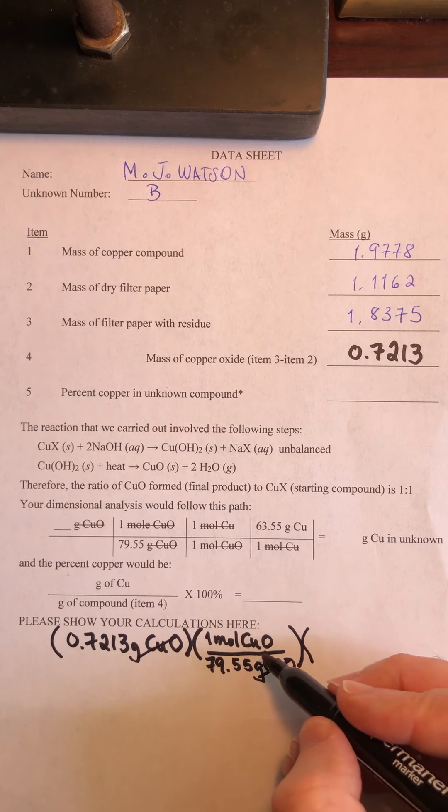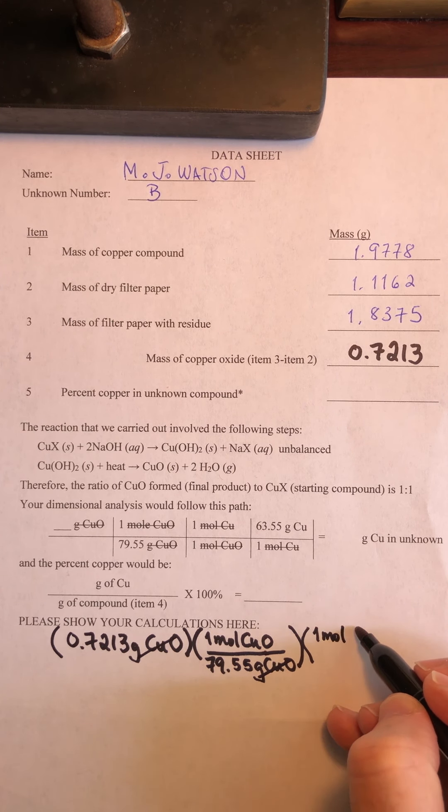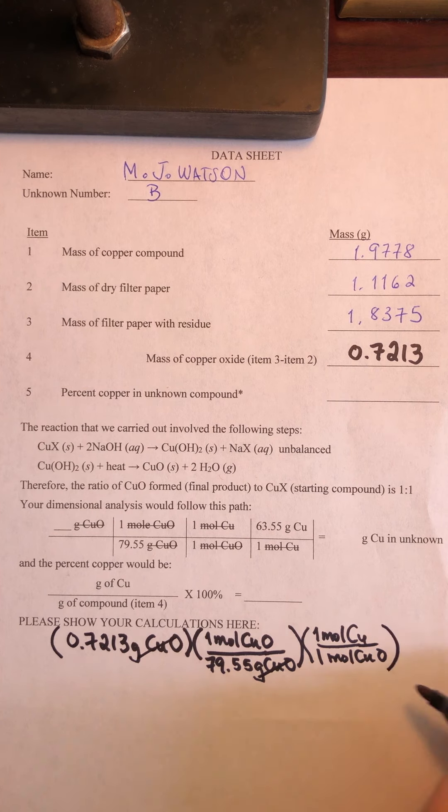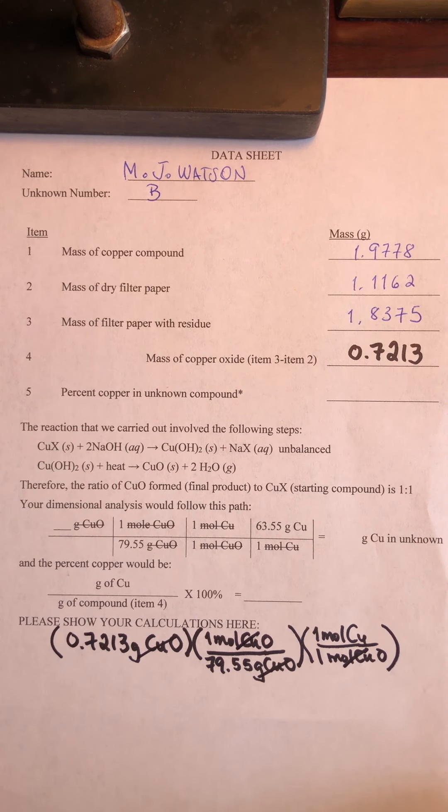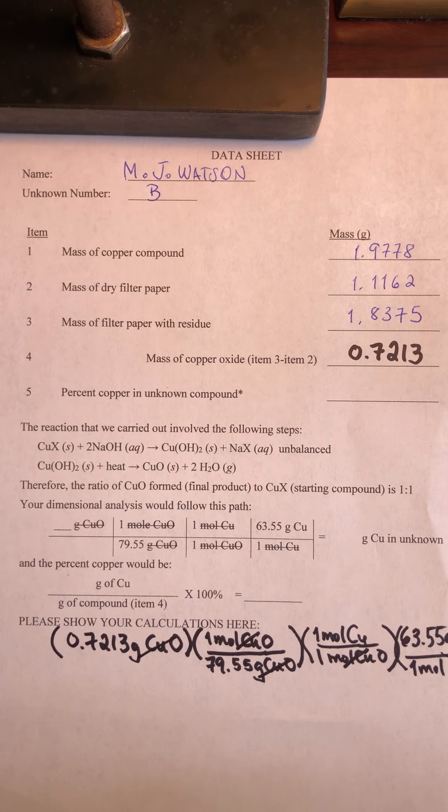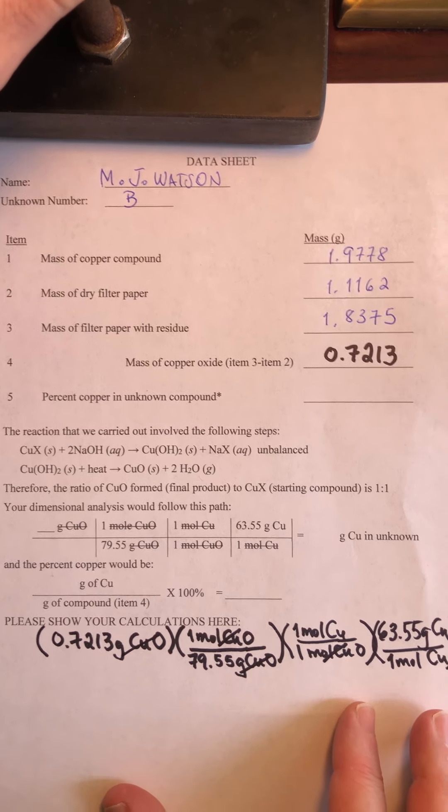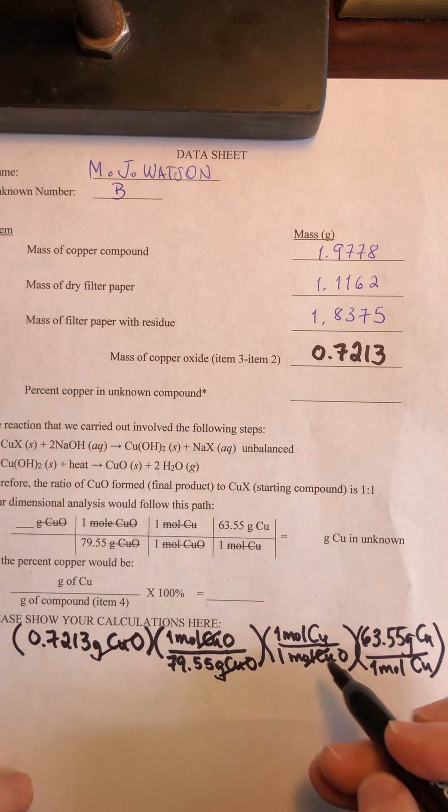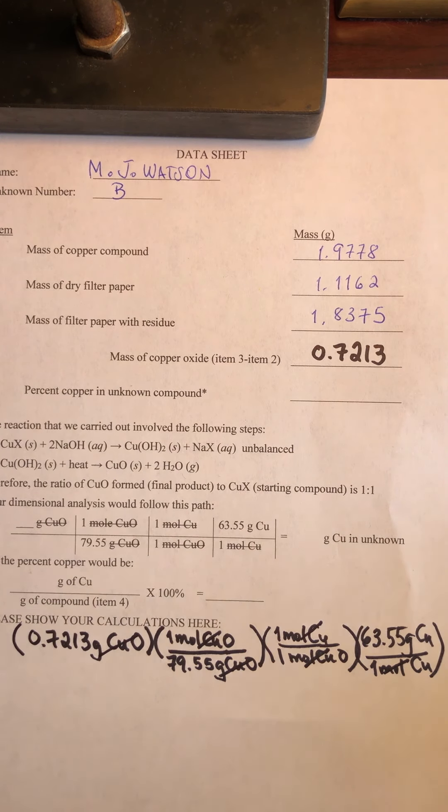And now we're going to say that in each mole of copper oxide, there is one mole of copper. And that's going to cancel out the moles of copper oxide. And finally, we have a molar mass of 63.55 grams of copper for every mole of copper. And I guess I kind of allowed this thing to slide a little too far. Okay, there we go. Sorry about that.